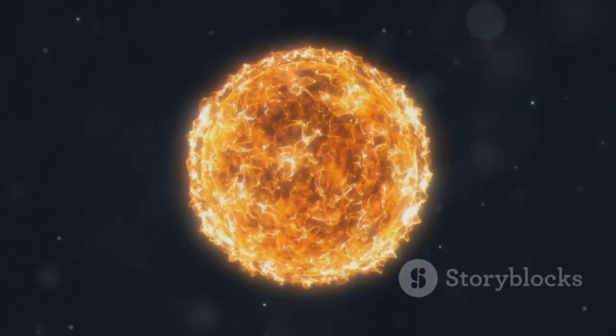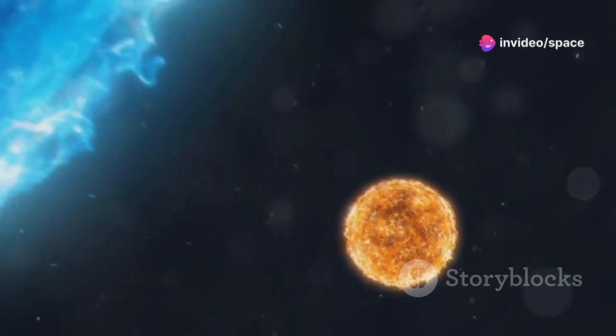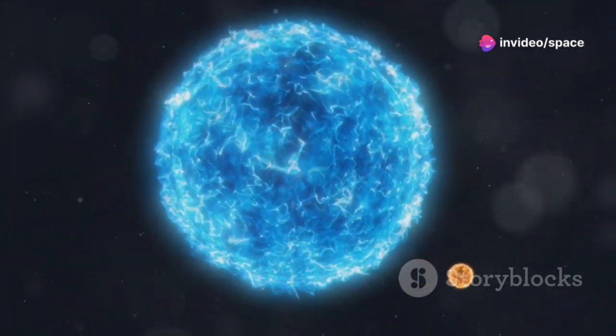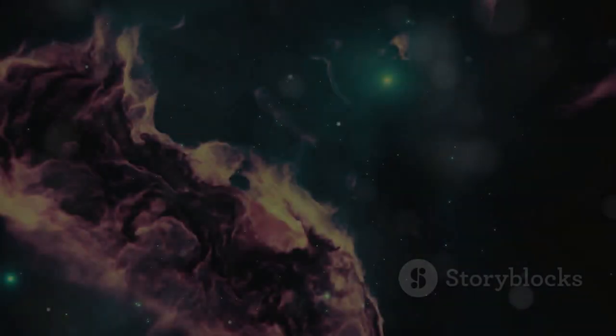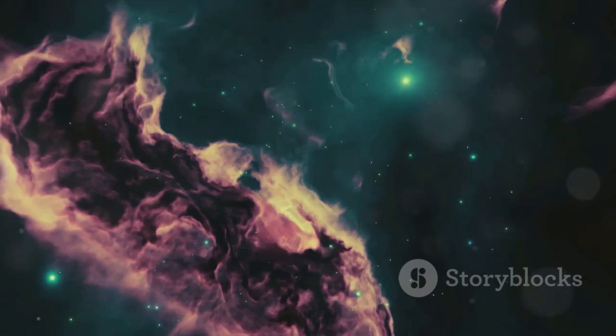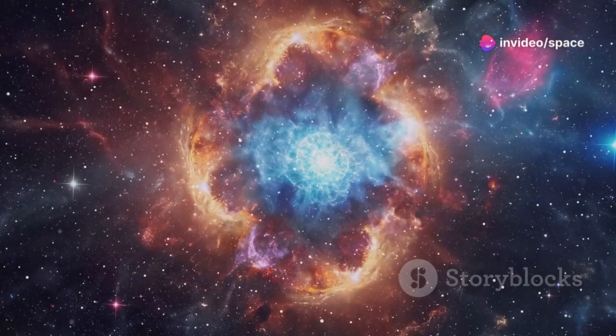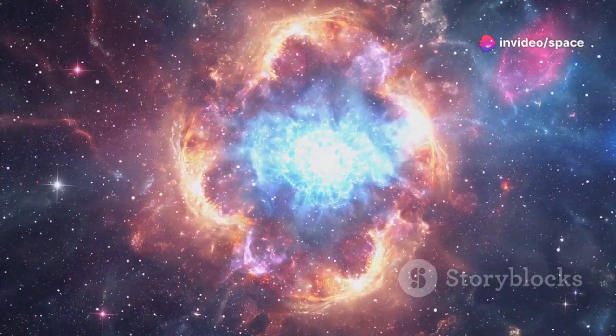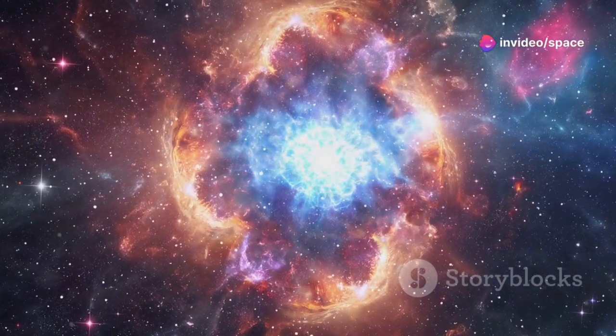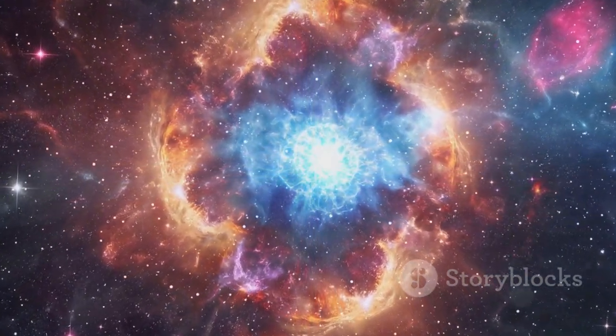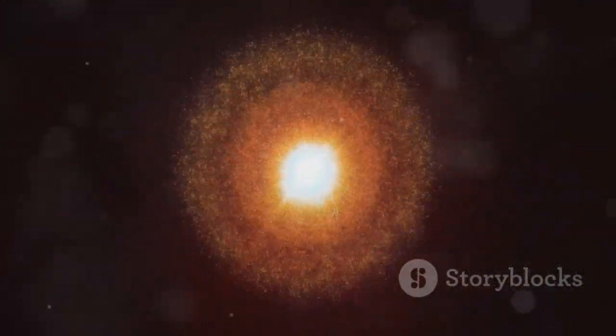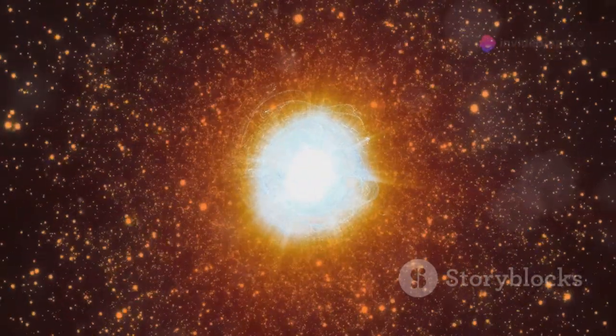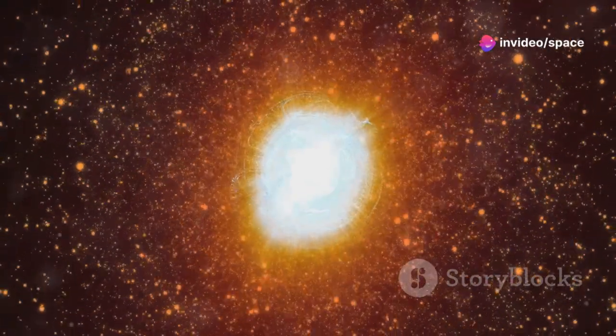These cells are gigantic, far exceeding the size of Earth, and their motion can greatly influence the star's luminosity. Another hypothesis posits that Betelgeuse is undergoing massive gas and dust ejections, forming a temporary veil that dims its light. Picture a colossal sneeze, but instead of saliva, it's a star expelling vast amounts of stellar material into space. These occurrences, known as mass loss episodes, are typical in aging stars and might explain the significant drops in Betelgeuse's brightness.